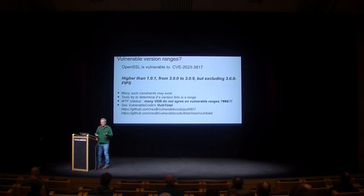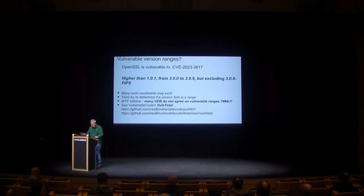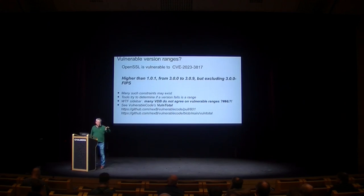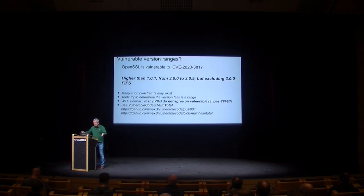Now let's look at dependencies from another angle: vulnerabilities. We have what's called CVEs — Common Vulnerabilities and Exposures — which is a common approach to give a number to a known software vulnerability. The principle is very similar: you say that OpenSSL has this vulnerability which describes a way to leverage OpenSSL that impacts versions higher than this version but not that version, and so on. So you have something which involves constraints and version ranges very similar to traditional dependency management.